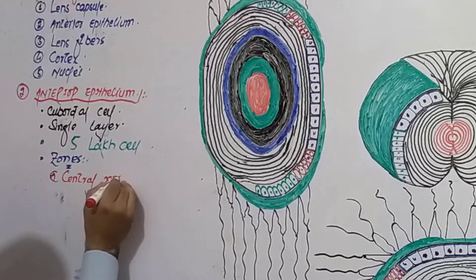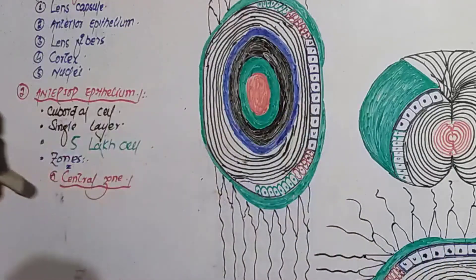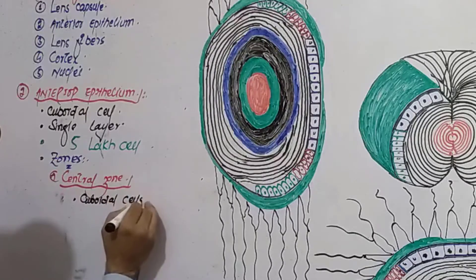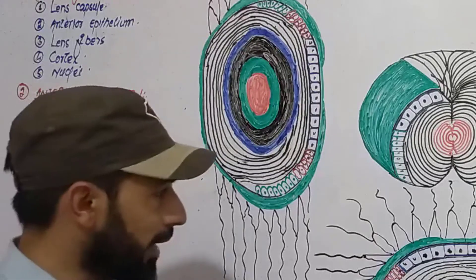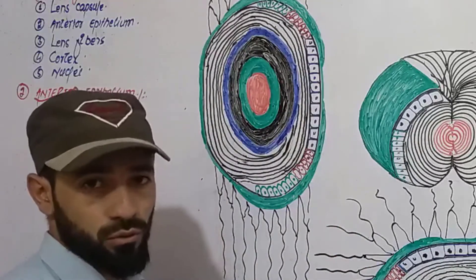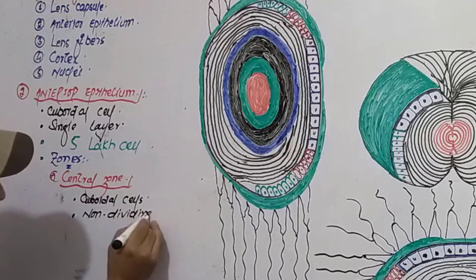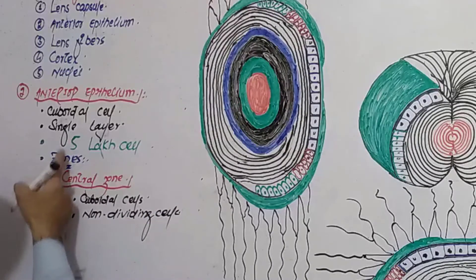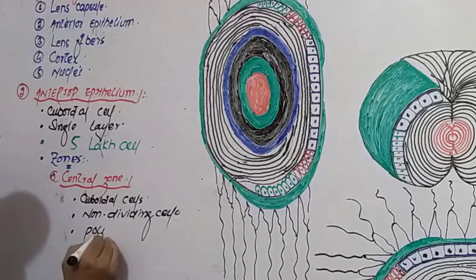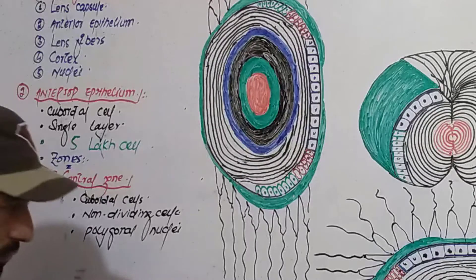In the central zone, all the cells have a cuboidal shape. These are non-dividing cells — they don't undergo mitosis. Once they are formed, they remain there for the whole life, unless they are damaged, in which case they show mitosis to repair. The central zone cells have polygonal-shaped nuclei.